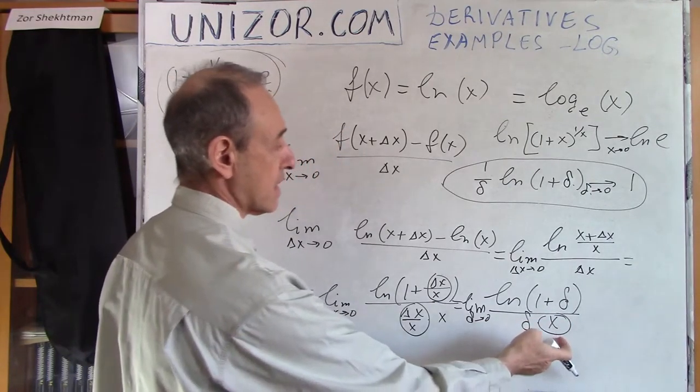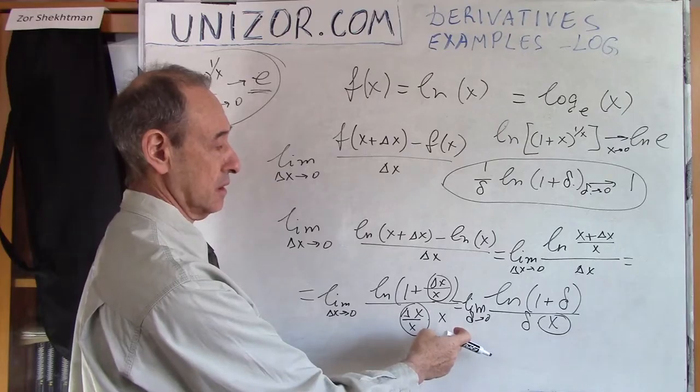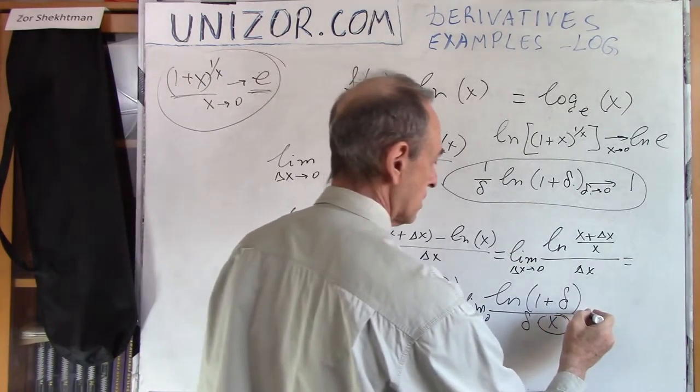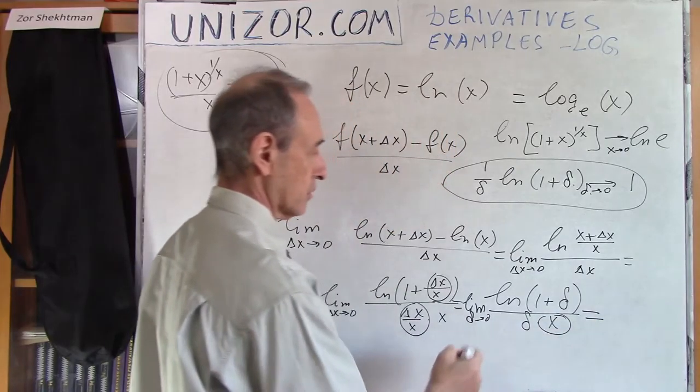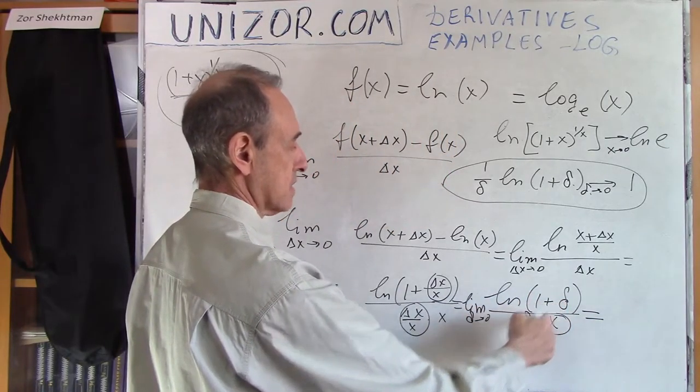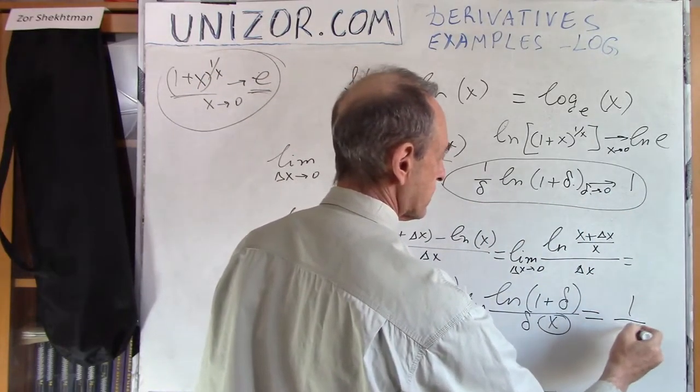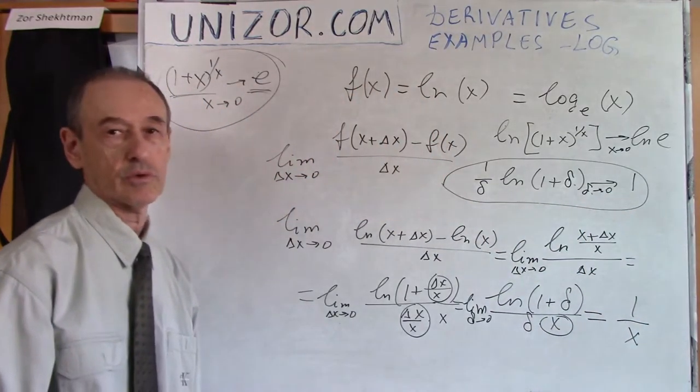And this is the constant, which means I have to put it outside of the limit, since it's a constant. So what's remaining? Remaining, this logarithm 1 plus delta divided by delta as delta goes to 0, which is 1. So the only thing which is remaining is 1 over x.